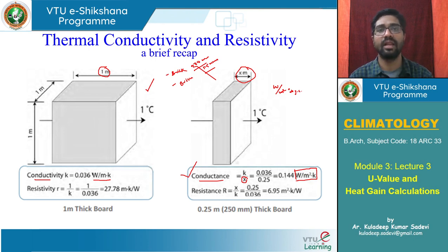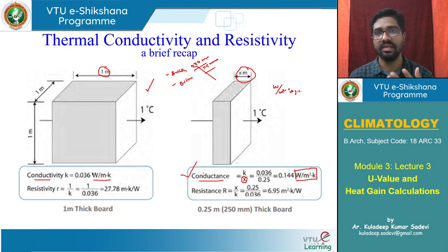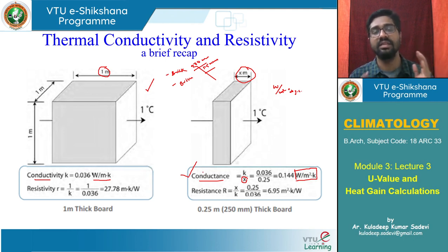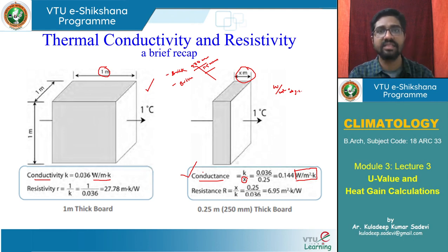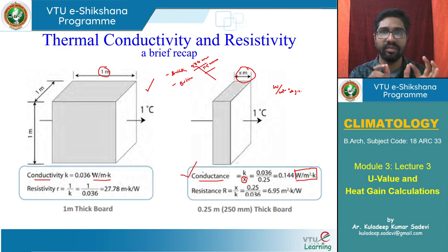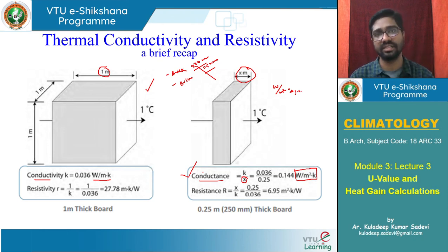U-value is similar to conductance, but when we talk about transmittance (U-value), we are also considering the surface conductance of the surface air thin film layer, which also offers certain resistance to heat flow on that particular material or wall. The conductance of a very thick brick wall will be lesser because heat transfer is much less through greater thickness.